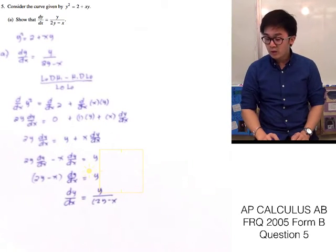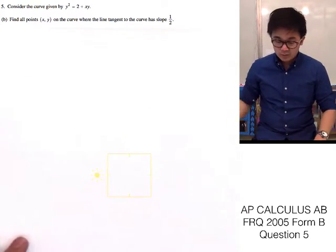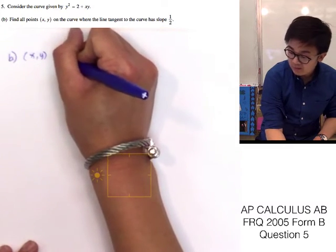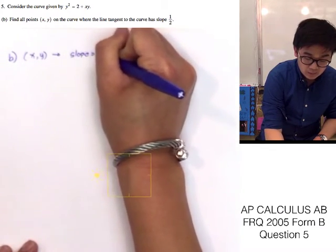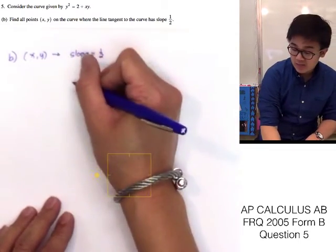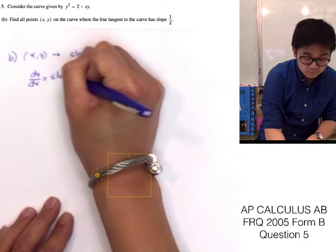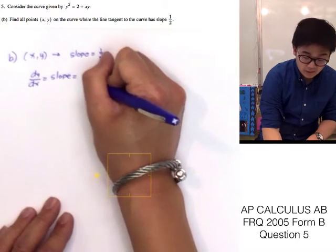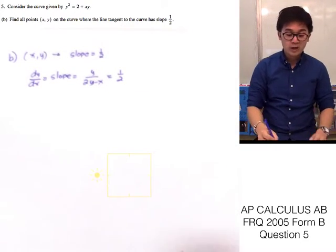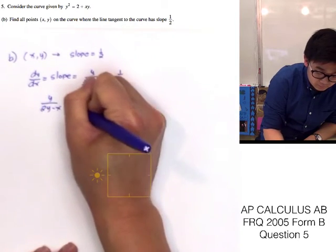For problem letter B, we need to find all points (x, y) on the curve where the line tangent to the curve has a slope of 1/2. We know in calculus that the slope of a given curve is the derivative of our function, so dy/dx equals y over 2y minus x, and we need to find where this equals 1/2.